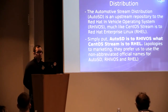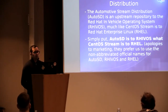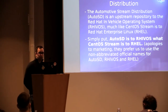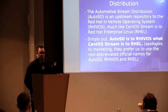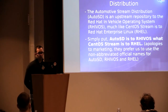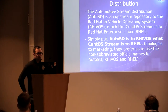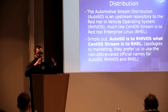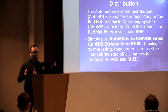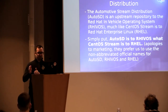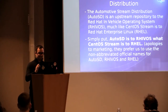The Automotive Stream distribution is an upstream repository to the Red Hat in-vehicle operating system — sometimes called RIVUS for short — much like CentOS Stream is to Red Hat Enterprise Linux. To glue this into people's heads: AutoSD is to RIVUS what CentOS Stream is to RHEL.